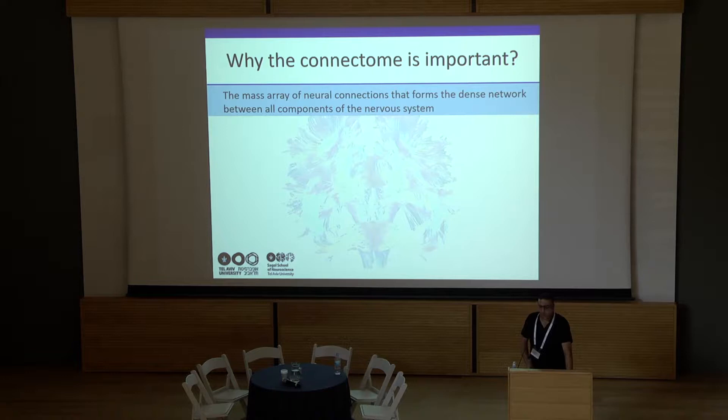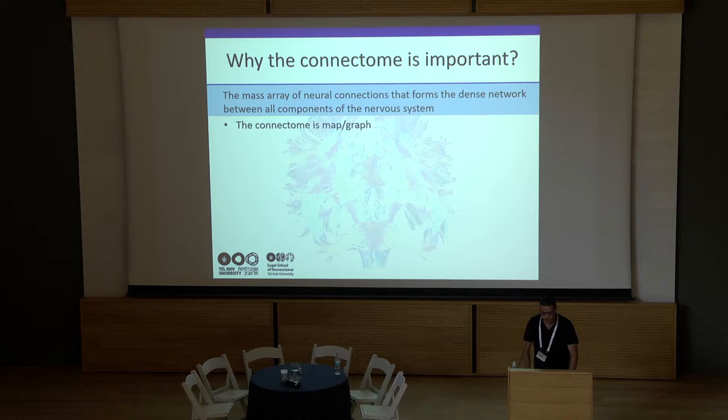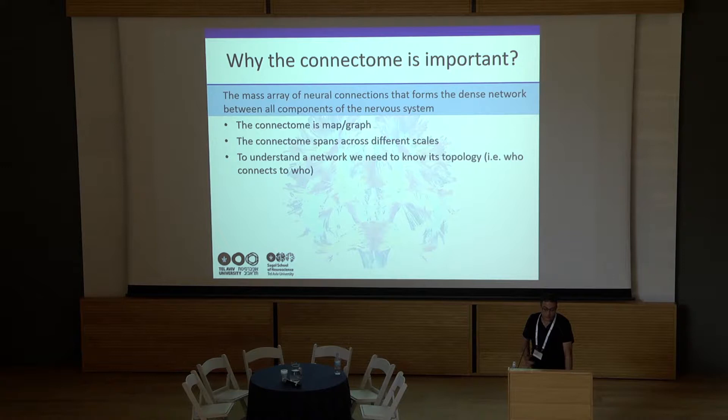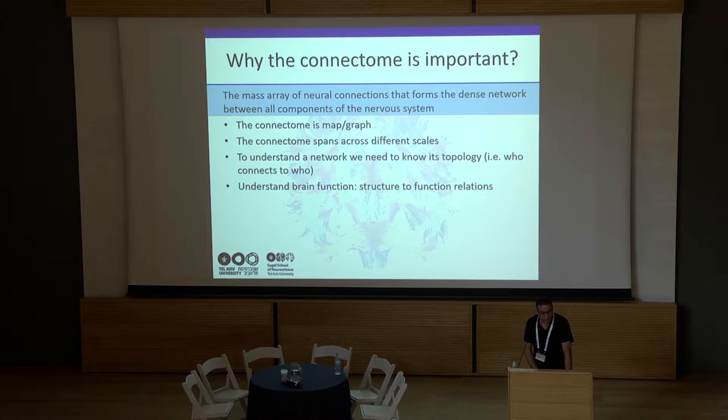Why is the connectome important? It is the massive array of connections between all components of the nervous system — and not only neurons. Glial cell connections are as important as any other and should be included. The connectome is a map, a graph, across different scales from the neural level to the system level. To understand the network, we need to know its topology — who connects to whom — and then we can perform further computations.